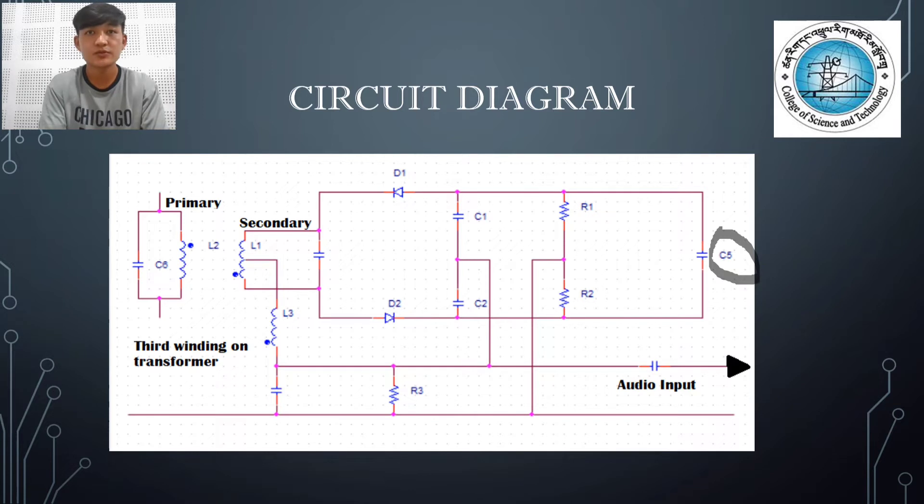The output signal is produced by the primary and secondary acting normally. The primary and the third windings are tightly coupled, and the third winding is untuned, which results in identical signal phasing in these two windings.